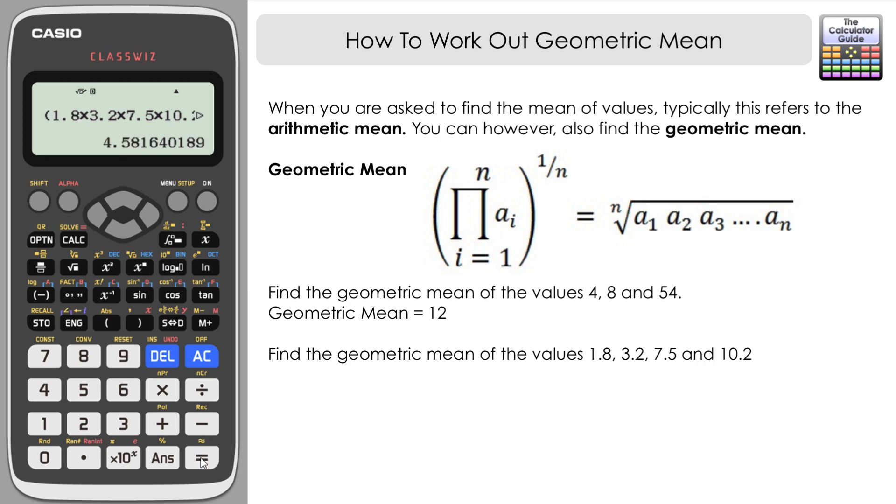Press equals and here we have our geometric mean: 4.582 to three decimal places. We could say that's 4.6 to one decimal place.